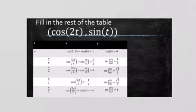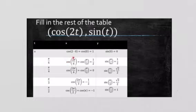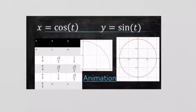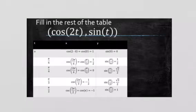When we fill in the table, we plug in 0 through pi over 2. Cosine of 2 times 0 is cosine of 0, which is 1. Cosine of 2 times pi over 6 is cosine of pi over 3, which is 1 half. Cosine of 2 times pi over 4 is cosine of pi over 2, which is 0. Cosine of 2 times pi over 3 is negative 1 half. Cosine of 2 times pi over 2 is cosine of pi, which is negative 1. The Y values are the same as before — 0, 1 half, root 2 over 2, root 3 over 2, and 1.